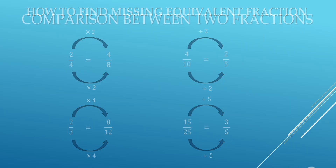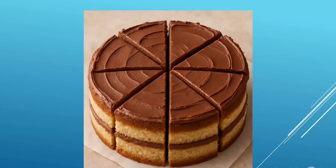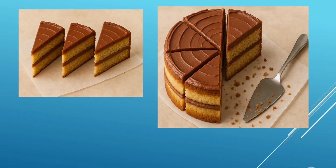Now we will study about comparison between 2 fractions. Suppose you have a cake at your home and the cake is divided into 8 slices. You and your friend want to eat it. You gave 3 slices to your friend and are left with 5 slices. The fraction of slices left with you is 5 upon 8, and the fraction with your friend is 3 upon 8. So 5 upon 8 is greater than 3 upon 8.